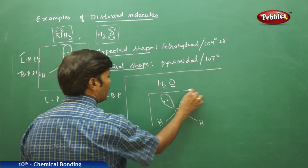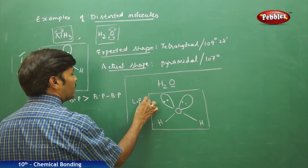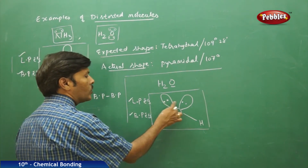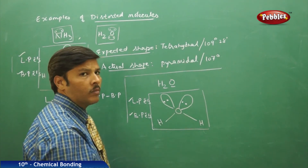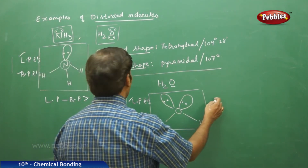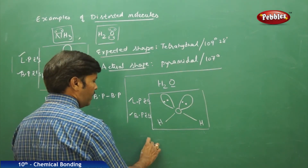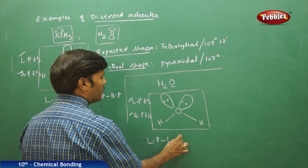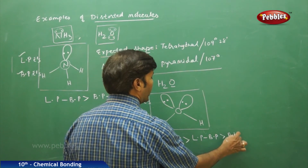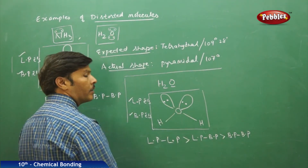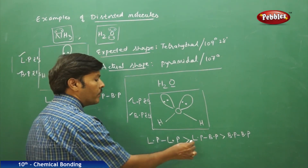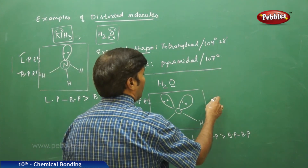From the structure of the water molecule, it is clear that it contains lone pair electrons and bond pair electrons — two lone pairs and two bond pairs around the central oxygen atom. The electronic repulsions taking place are: lone pair to lone pair repulsions in water are greater than lone pair to bond pair repulsions, which are greater than bond pair to bond pair repulsions. Because of these three kinds of repulsions, the molecule becomes distorted.